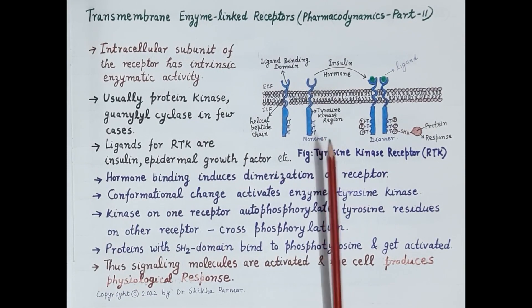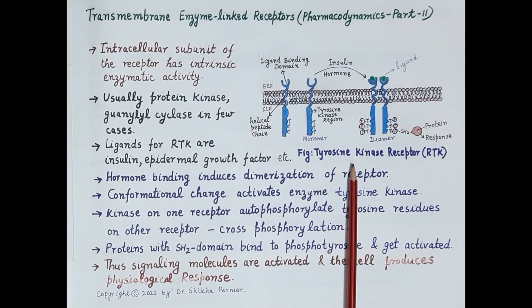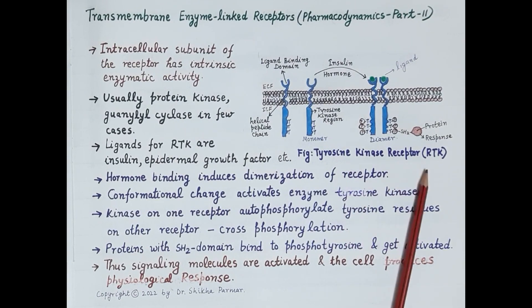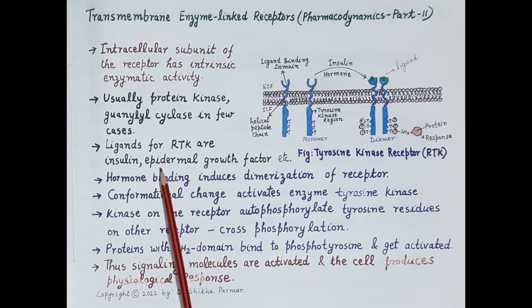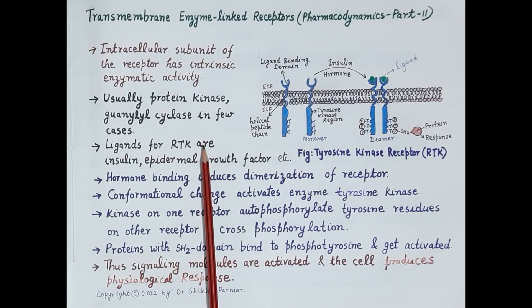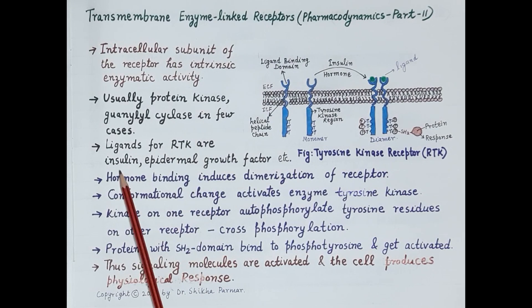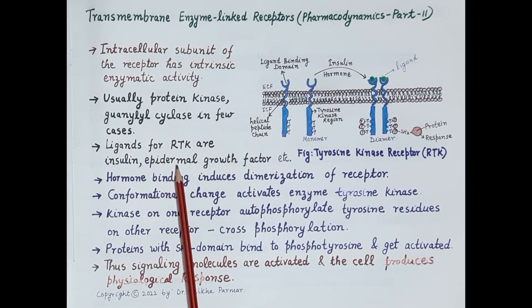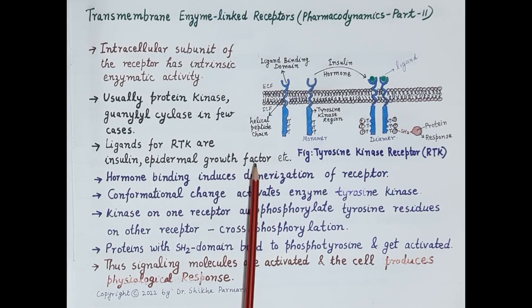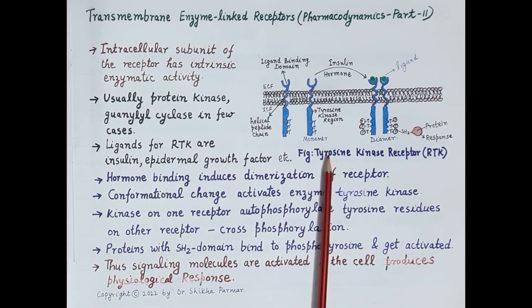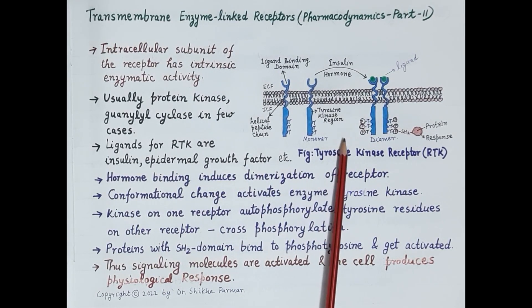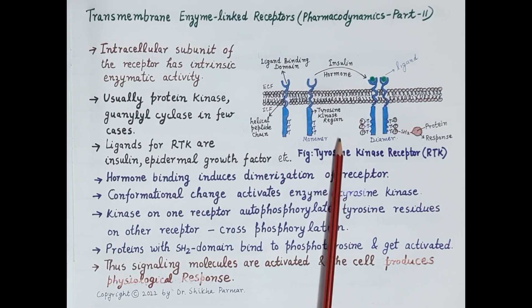Now if the enzyme tyrosine kinase is attached, the receptor is termed as receptor tyrosine kinase, that is RTK. Ligands that activate receptor tyrosine kinase are, for example, insulin, epidermal growth factor, nerve growth factor, and many others.